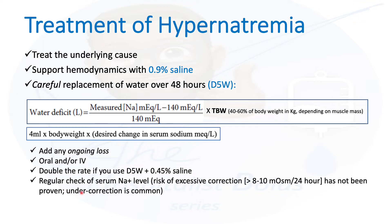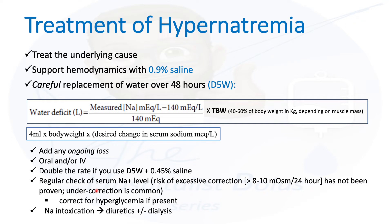In my experience, under-correction is probably more common — instead of correcting over 48 hours, we tend to correct over three or four days. Keep that in mind. If hyperglycemia is a cause, correct for that as well. If excess salt was given — such as in TPN or hypertonic saline — you may need diuretics or dialysis, especially if the patient has kidney disease and can't make urine.